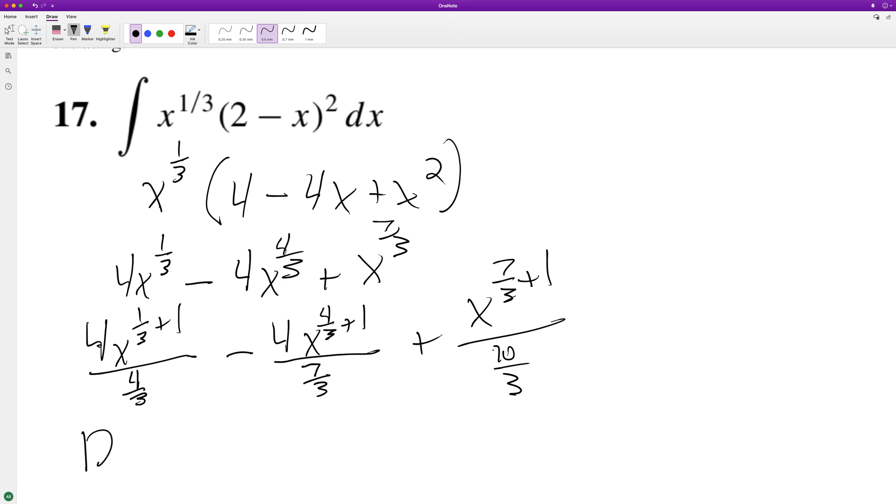So we're gonna end up with 12 divided by four x raised to the four thirds, so that's just three minus 12 divided by seven x raised to the seven thirds plus three.